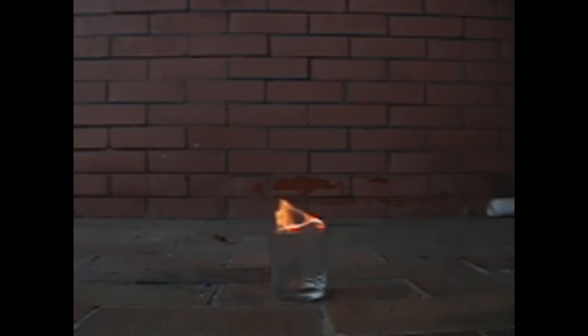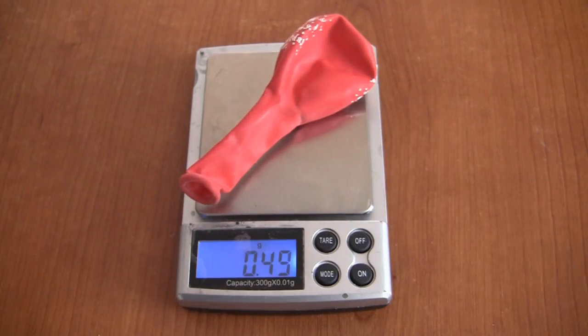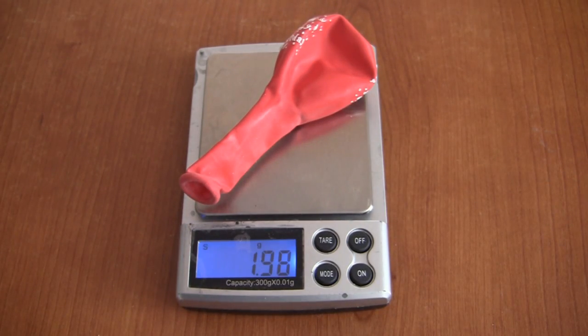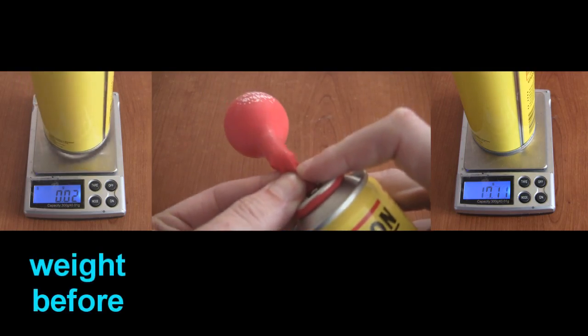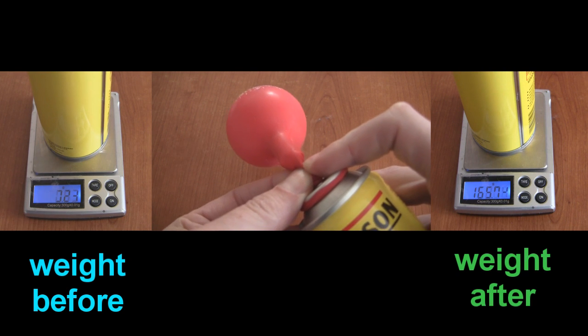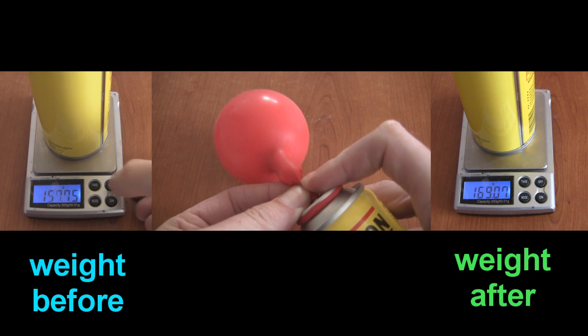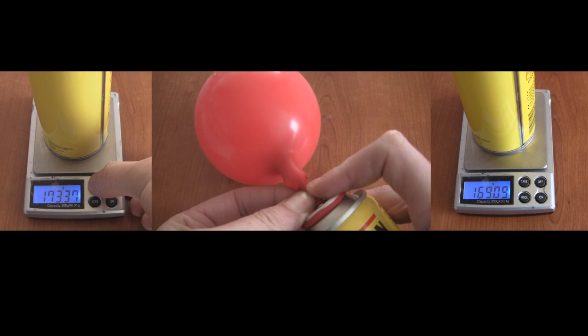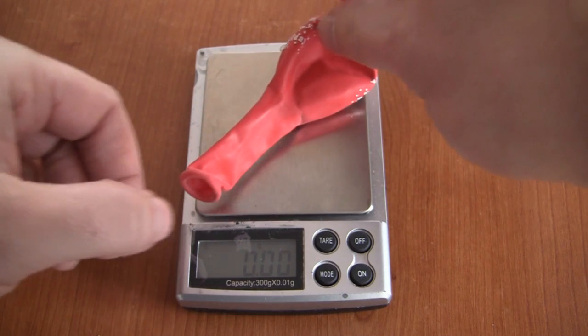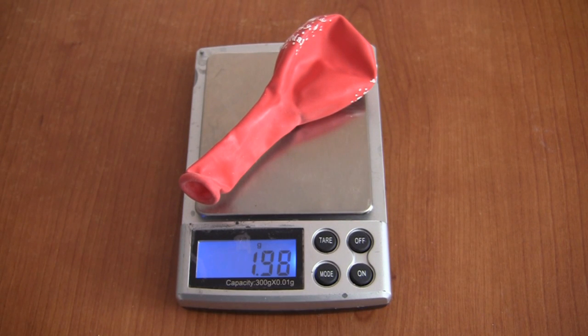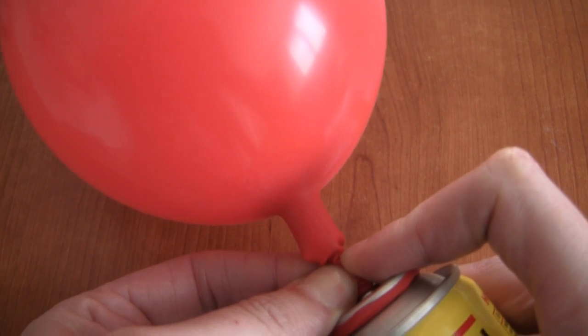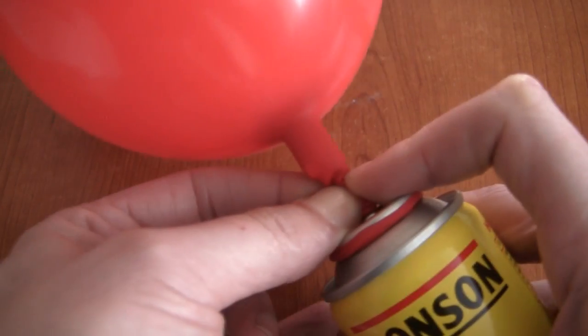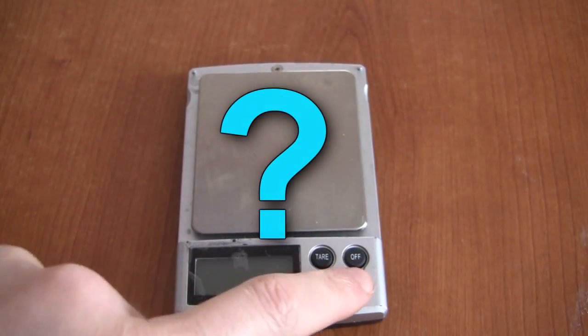So riddle me this. A balloon weighs about 2 grams and then I'm going to add about 4 grams of butane to it. So here is the mass of the canister before and afterwards and I'm going to assume a lossless transfer of that butane to the balloon which is actually a very good approximation in this case. So now comes the question. The balloon weighs 2 grams. The mass of the butane in the balloon is 4 grams. So how much does the balloon weigh when I put it on the scales?